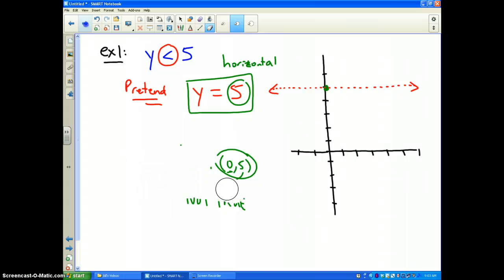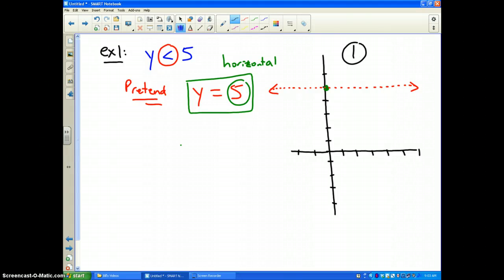Now, our boundary line is drawn. It divides our coordinate plane into two parts. The top half, which I'll call part one, and the bottom half, which is part two.